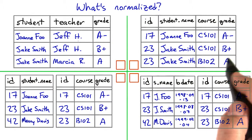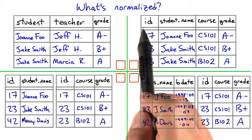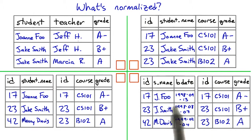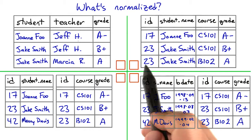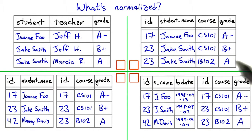Over here we also have a single table. Here we've given each student a unique ID number, and we're also using a unique ID for courses instead of just the teacher's name. But we're storing facts that don't have to do with each other in the same table — like student 23 is always Jake Smith regardless of what course he's taking. This really ought to be split into two tables. So this is also not normalized.